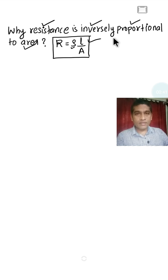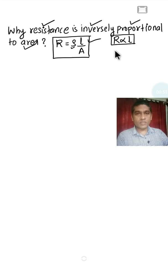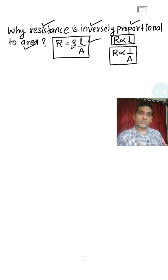We have discussed why resistance is directly proportional to the length. Today, I am going to explain why resistance is inversely proportional to the area, or why resistance is inversely proportional to the area of cross section of the conductor.